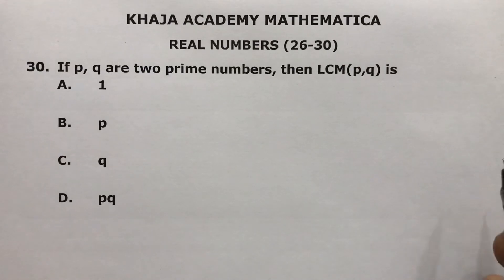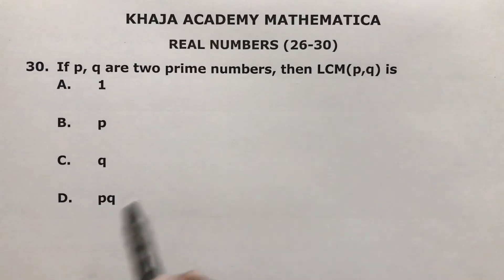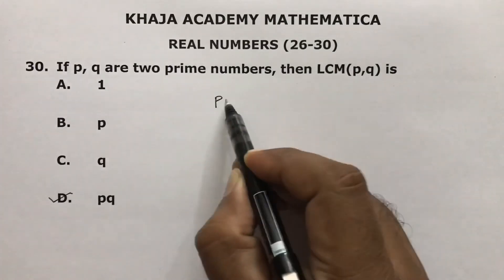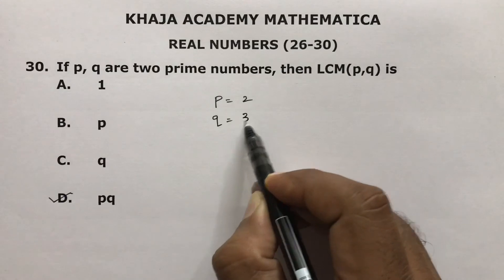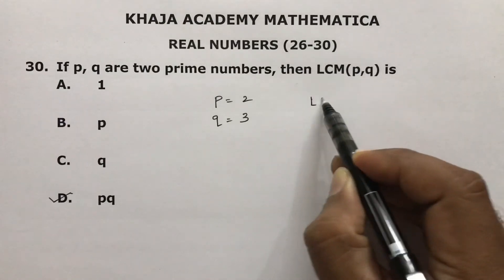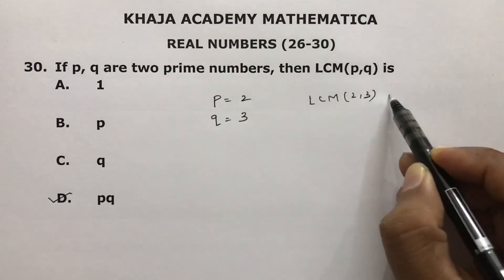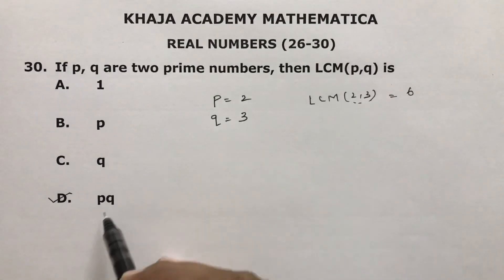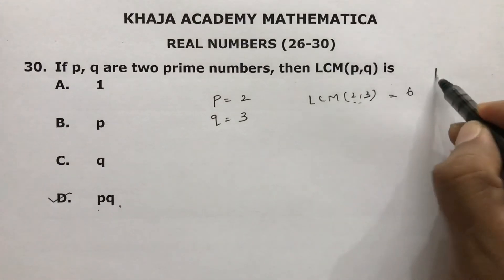If p and q are two prime numbers, then the LCM of p and q is their product. The correct option is D. For example, take prime number p as 2 and q as 3; the LCM of 2 and 3 is 6, which is the product of the two numbers. So LCM of p and q equals p times q.